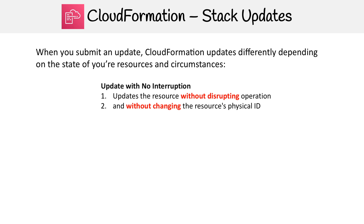The first action is update with no interruption. Imagine you have an EC2 instance and you just need to change something like a security group. This update will be performed without affecting the operation of the actual service — the availability of the service will still remain, and the physical ID will not change. For EC2, the physical ID or Amazon resource name will not change. It's just a configuration change taking effect.